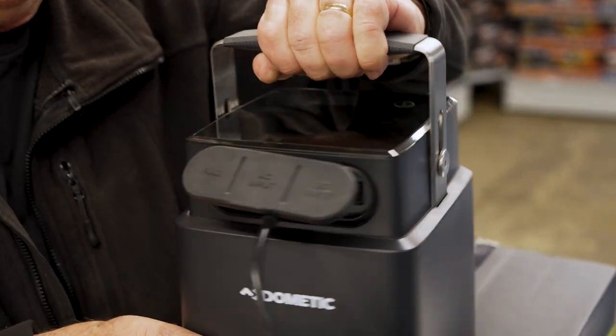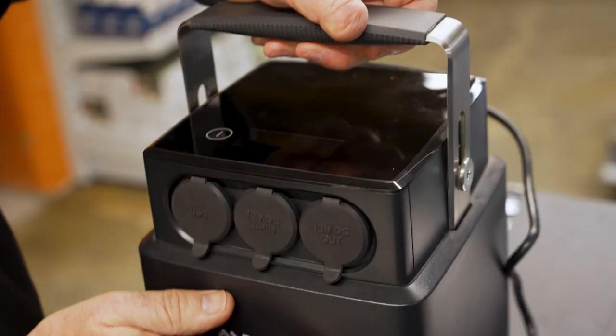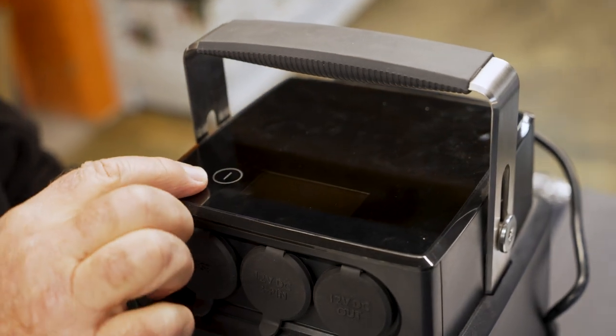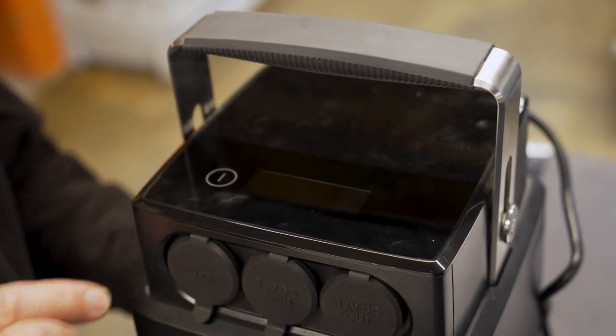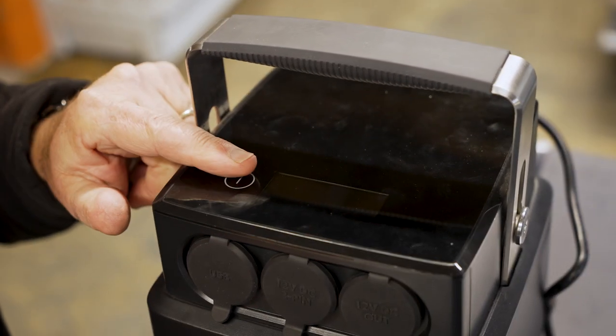I'll show you how it operates. There's nothing much to see up on the top there. You've got a little on-off switch there, and that's your digital display. To turn this unit on, you put your finger on there and hold it for about three seconds, and you'll hear it beep twice.